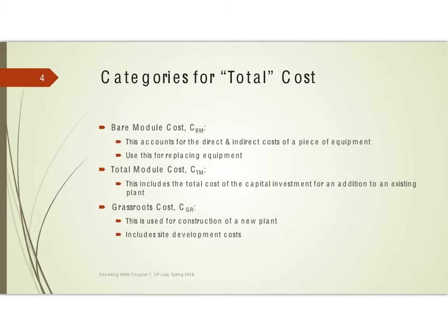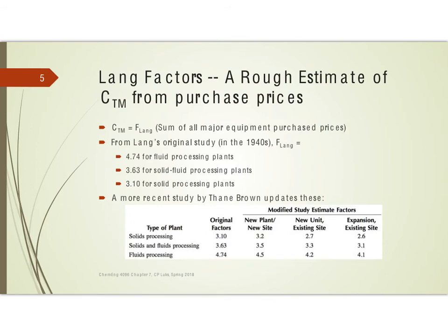A grassroots cost says you're starting with nothing — for example, you purchased a cow pasture and you're going to build a chemical plant on it. In that case, you're going to have site development costs, which will cost you more. So those are the three categories we will use. One way to take the purchase price and move to total module cost — or even grassroots cost — is the Lang factor approach, which takes the purchase price of the equipment, C sub P, and turns that into the total module cost.